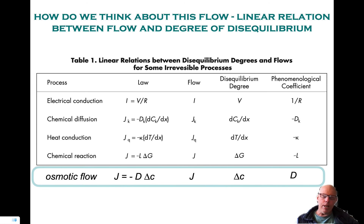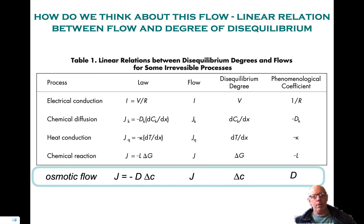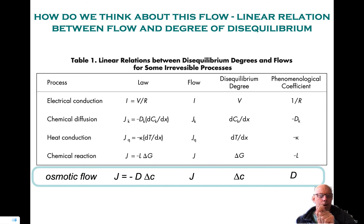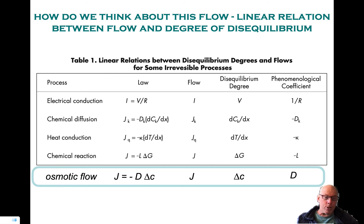Similarly for heat conduction there is the Fourier law. The Fourier law tells me if there's a gradient in temperature, that will be smoothed out over time. There will be a heat flow j, with units of energy per area per time, proportional to the gradient in temperature. The coefficient of proportionality is the so-called thermal conductivity.